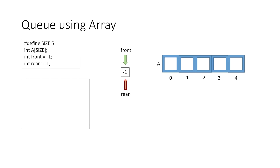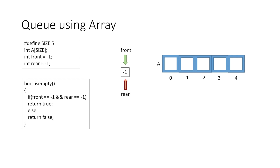Let's start with the isEmpty method, which returns a boolean value to tell whether the queue is empty or not. The queue is empty when front and rear are both equal to -1, and if that's the case we simply return true, else we return false.